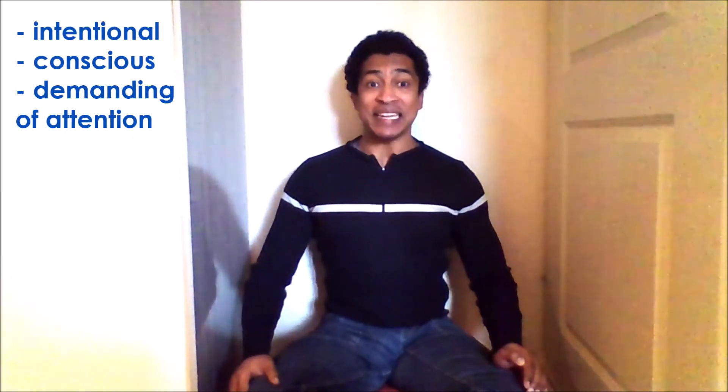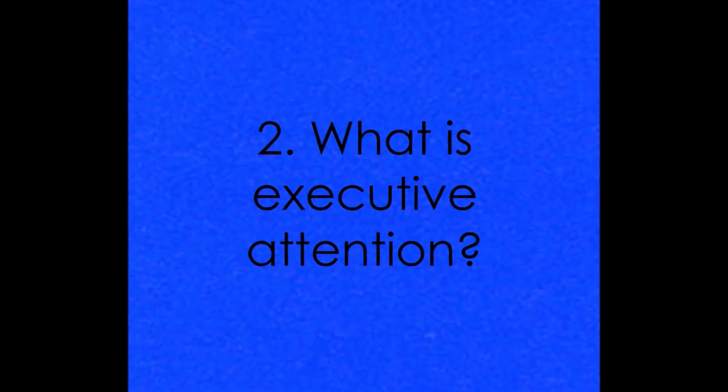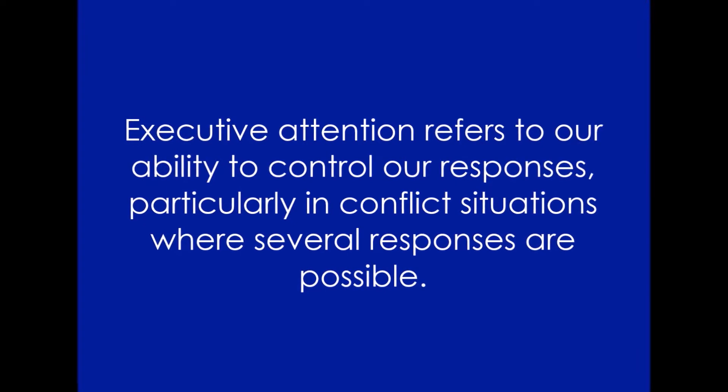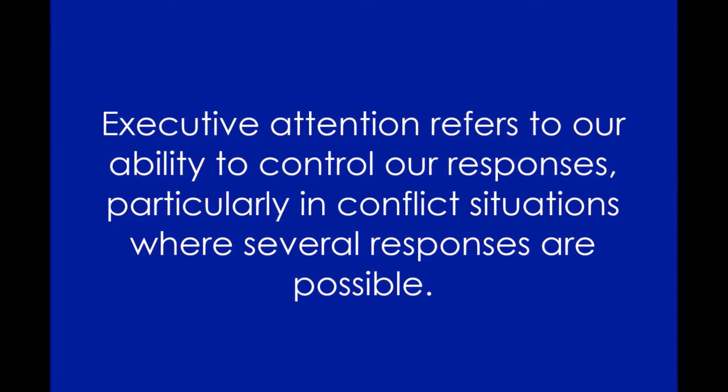On the other hand, controlled processes are intentional, conscious, and demanding of attention. Executive attention is an example of a controlled process. Executive attention refers to our ability to control our responses, particularly in conflict situations where several responses are possible. It refers to a supervisory attentional system which inhibits inappropriate responses and activates appropriate ones. Its function is to control our thoughts and behavior in adaptive ways — so instead of following our habits, we adapt to a new situation and decide to act according to that change.